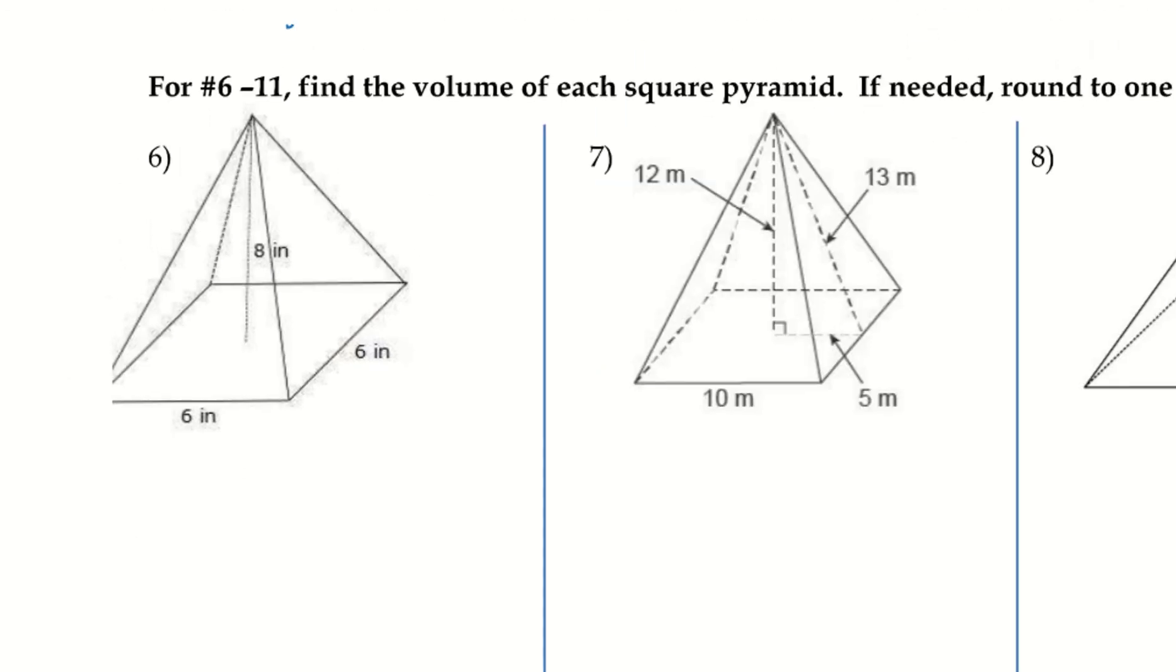So, if we are, looks like we're missing a side, we'll just use, know that knowledge that we are using square pyramids. So, I have one-third times the area of the base, so that's going to be six squared, times the height.